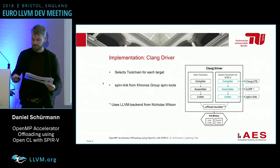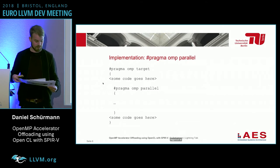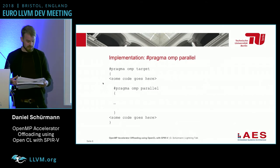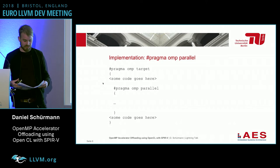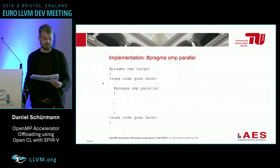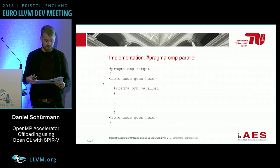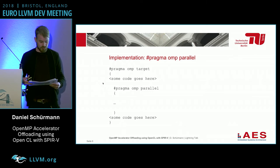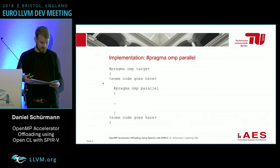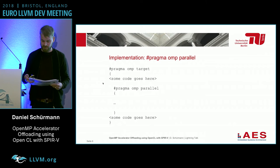We will look at this for the exemplary parallel for pragma. This code scheme has the semantics of some offloaded code sections starting sequentially with one thread, then forking a number of threads and running in parallel, then joining the threads again and continuing sequentially. The compiler creates an outline function for the parallel block and calls fork.